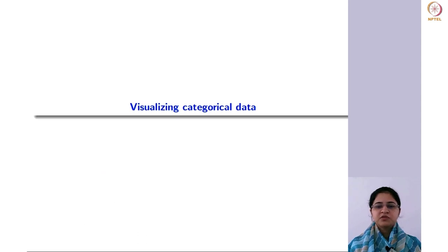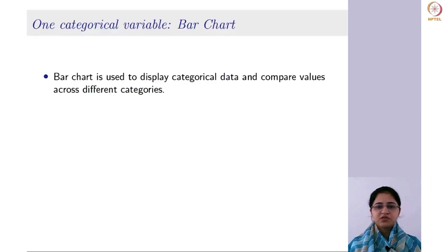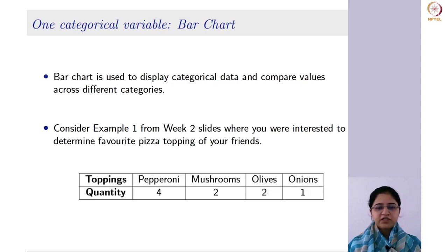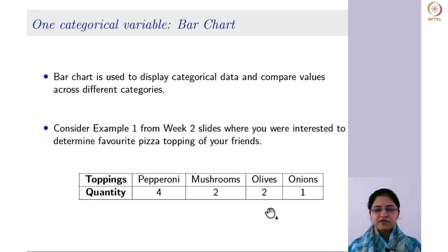Let us begin with the visualization of categorical data. The first one is the bar chart, which is basically used to display categorical data and compare values across different categories. Consider the example from week two where you were interested in determining the favorite pizza topping of your friends. The toppings — pepperoni, mushrooms, olives, and onions — were your categorical variable and the corresponding counts were collected.